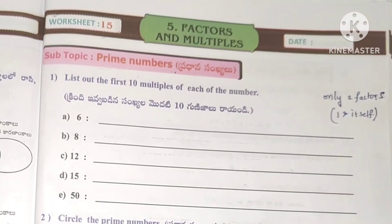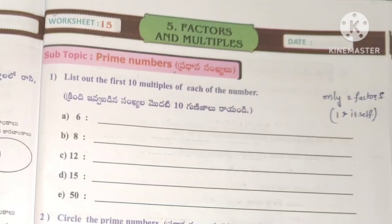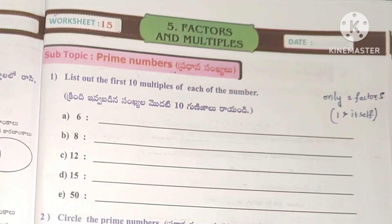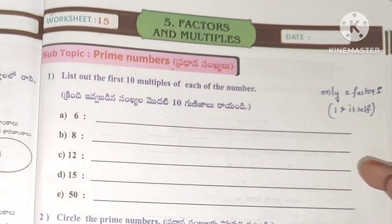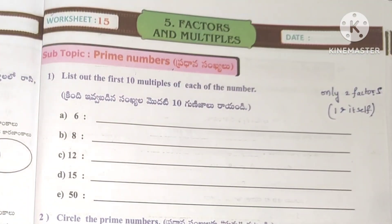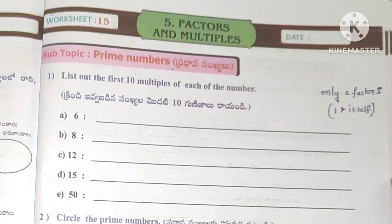The two factors are one and itself. A factor is a number that completely divides the given number. So let's go ahead.